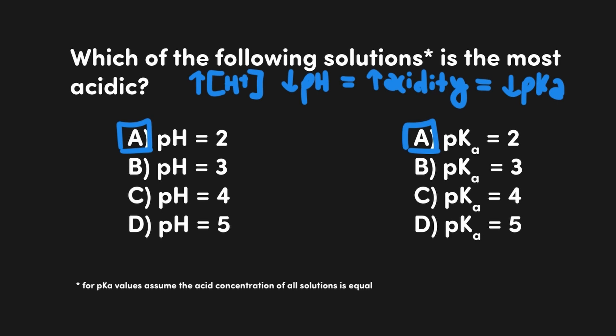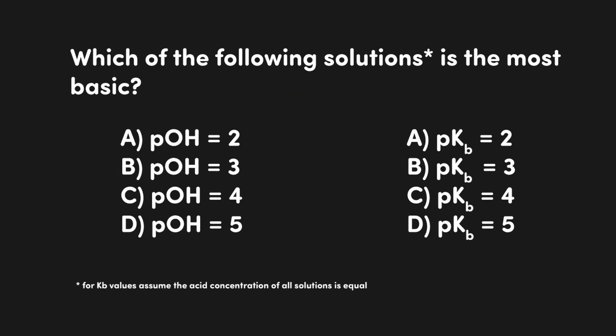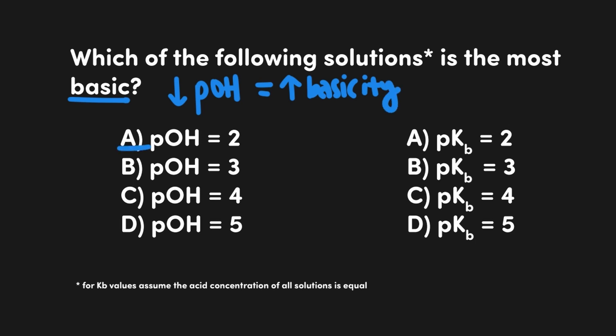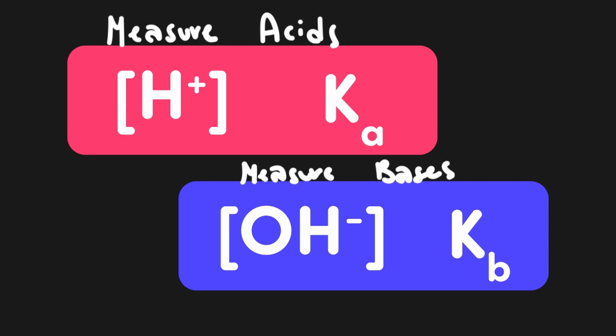We can translate this exact same idea over to basicity, looking at pOH and pKb. This question asks: which of the following solutions is the most basic? Just like we were looking for the lowest pH for the most acidic solution, we would be looking for the lowest pOH for the most basic solution. Again, the answer is A, since a pOH of 2 is the smallest number. If we translate this over to pKb, we would also be looking for the smallest pKb value, which is also A with a pKb of 2. All of these values work the same way — it's simply a matter of knowing what they're supposed to be measuring: H+ concentration and Ka measure acidity, as do pH and pKa. They're just inverses of one another. Basicity works the same way but uses hydroxide concentration, Kb, pOH, and pKb.